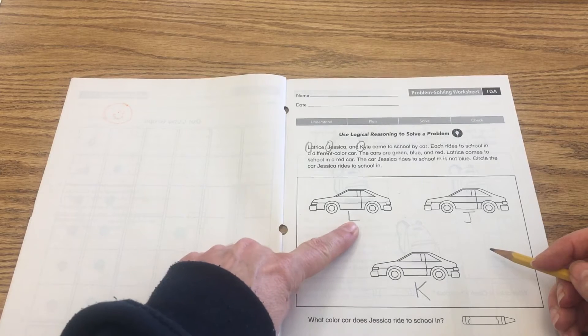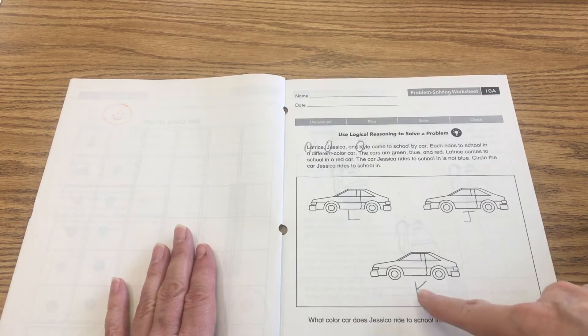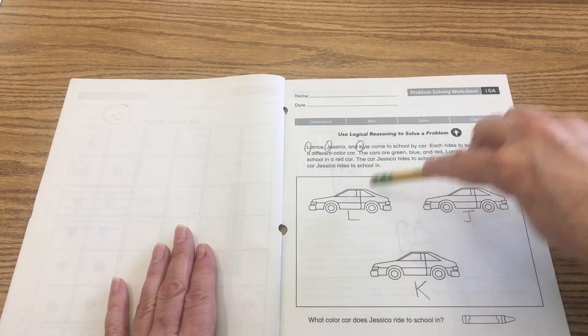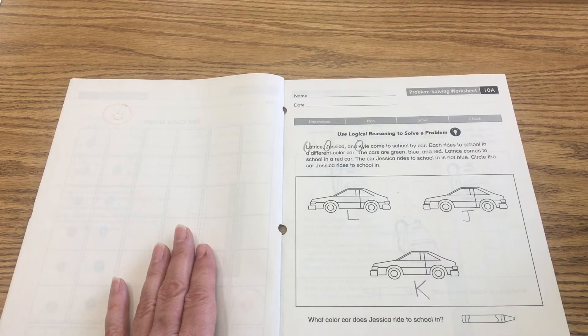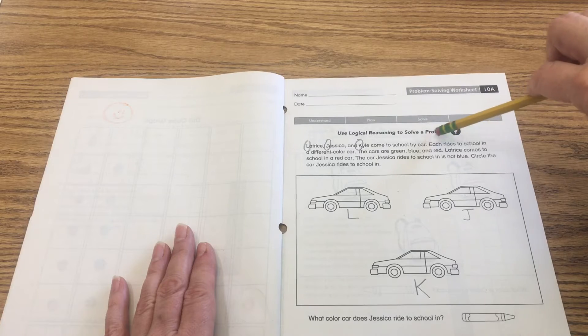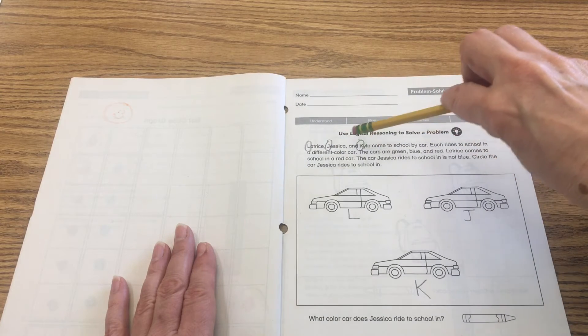Put an L under this car, a J under this car, and a K under that car. So now this is Latrice's car, this is Jessica's car, and this is Kyle's car. I'm gonna finish, I'm gonna read the rest of the story. Each rides to school in a different color car. The car colors are green, blue, and red.